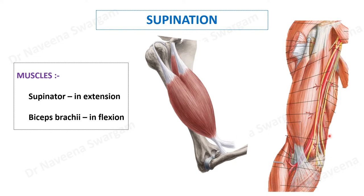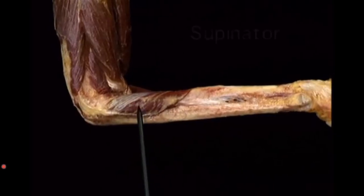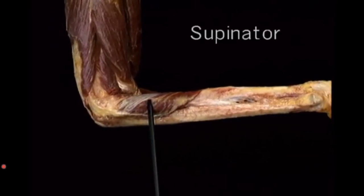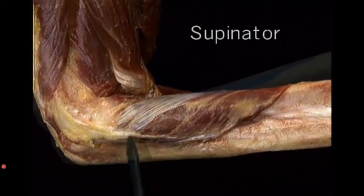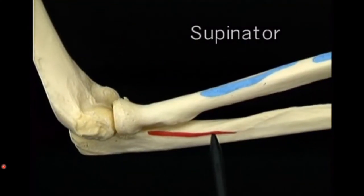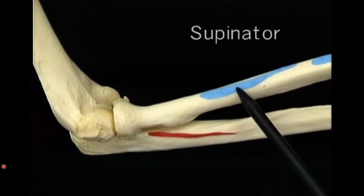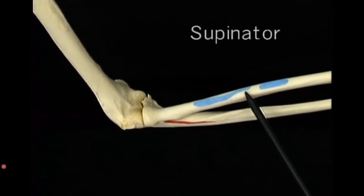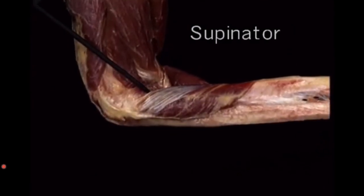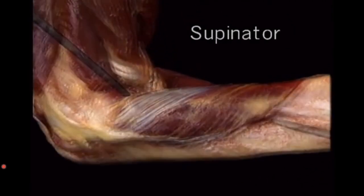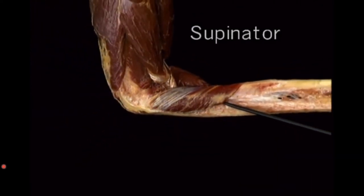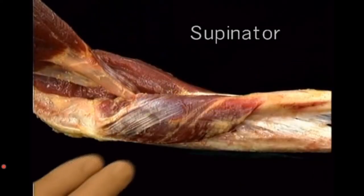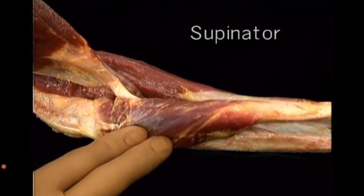Let's understand these muscles by looking at the following video clip. Here is the supinator muscle with its superficial head and deep head. Here is its site of insertion onto the radius. Both heads of the supinator muscle have spiralized fibers. When they contract, they cause lateral rotation of the upper end of the radius.